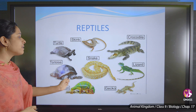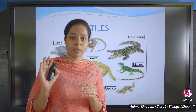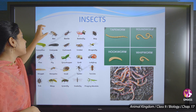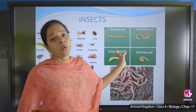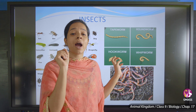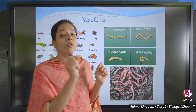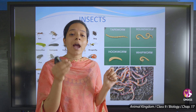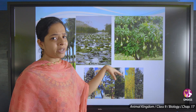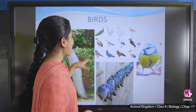Reptiles include snakes, crocodiles, and lizards that crawl on the floor and walls. Insects include ants, bees, butterflies, bugs, and worms like hookworms and earthworms. Plants and trees like mango tree, neem tree, small plants, lotus plants also come under species. And birds are also a species category.